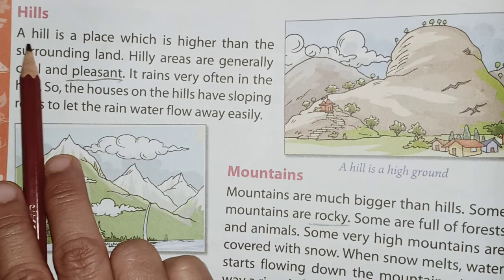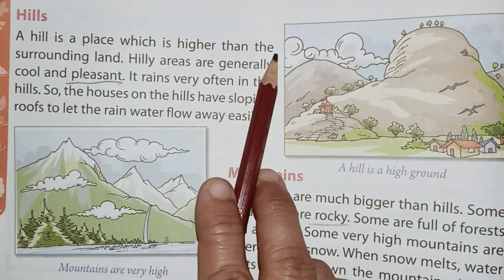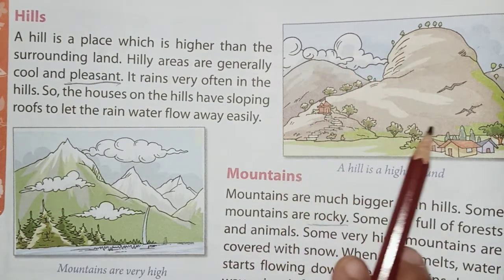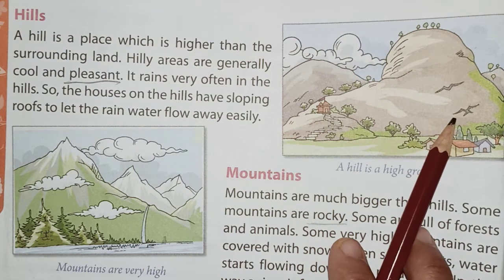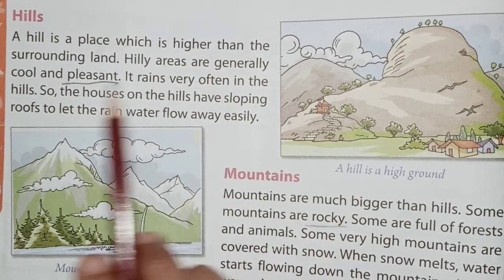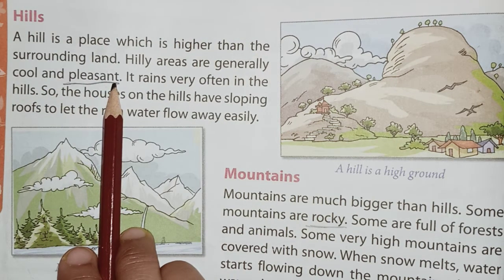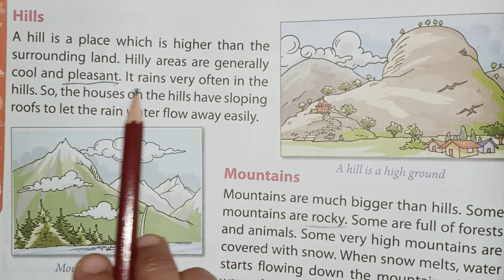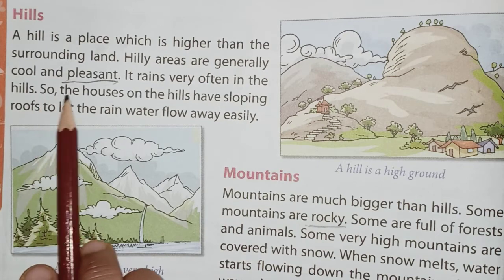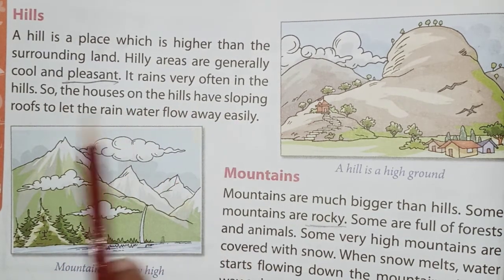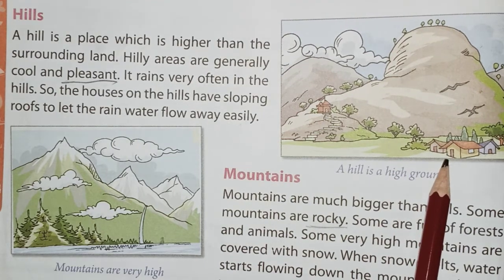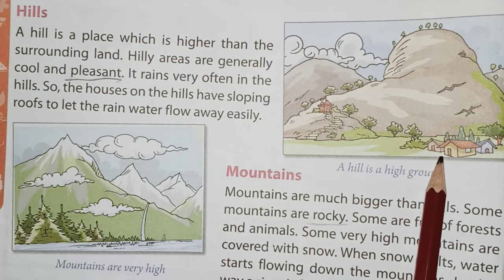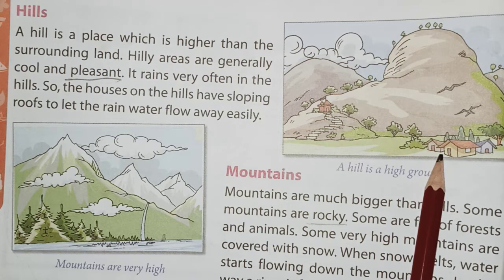Next is hills. A hill is a place which is higher than the surrounding land. Here it is flat land and some land is raised — it is known as hills. Hilly areas are generally cool and pleasant with very cool air. It rains very often in the hills, so the houses on the hills have sloping roofs to let the rainwater flow away easily.